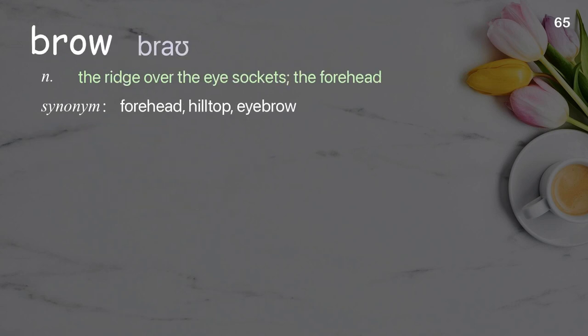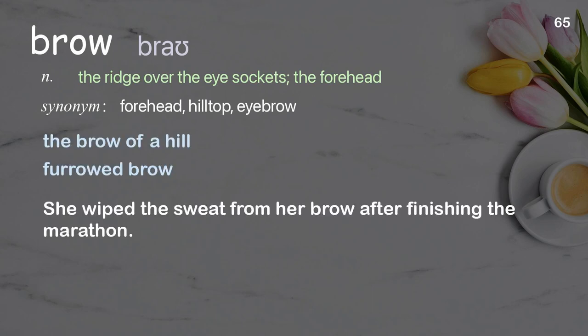Brow: the ridge over the eye sockets; the forehead. Examples: the brow of a hill; furrowed brow. She wiped the sweat from her brow after finishing the marathon.